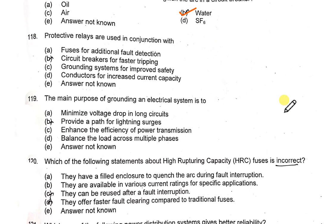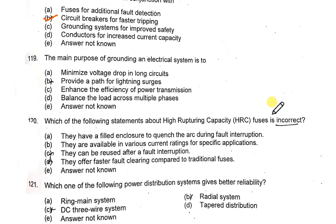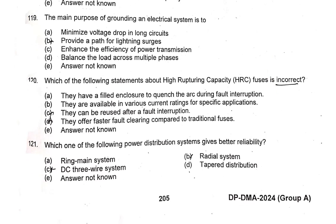Protective relays are used in conjunction with circuit breakers. The main purpose of grounding an electrical system is to provide a path for lightning surges.